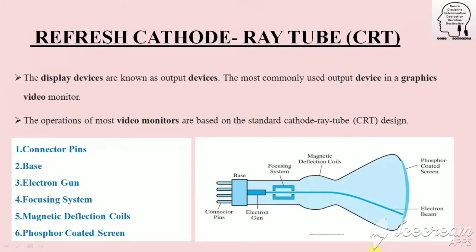This is a basic structure of cathode ray tube. There are connector pins, a current circuit, and an electron gun. We produce an electron beam on the phosphor coated screen. We can display images on the phosphor coated screen. We can see the focusing system and magnetic deflection coils. There is a screen, and there is a spot where we can see the image.